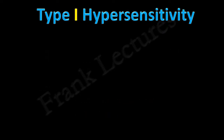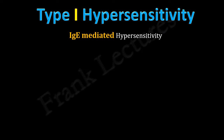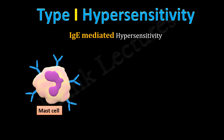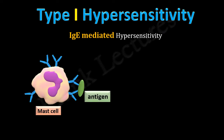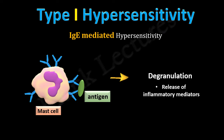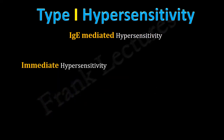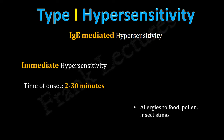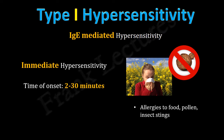Type 1 hypersensitivity reactions are IgE mediated reactions. In this case, antigen-specific IgE antibodies bind themselves to cells such as mast cells and basophils. When these antibodies interact with the antigen, degranulation of cells occurs. This degranulation releases inflammatory mediators which further result in symptoms of the reaction. Type 1 hypersensitivity is also known as immediate hypersensitivity, since it occurs immediately upon exposure to the antigen — it takes only 2 to 30 minutes to develop. Examples include allergies to food, pollen, insect stings, etc.